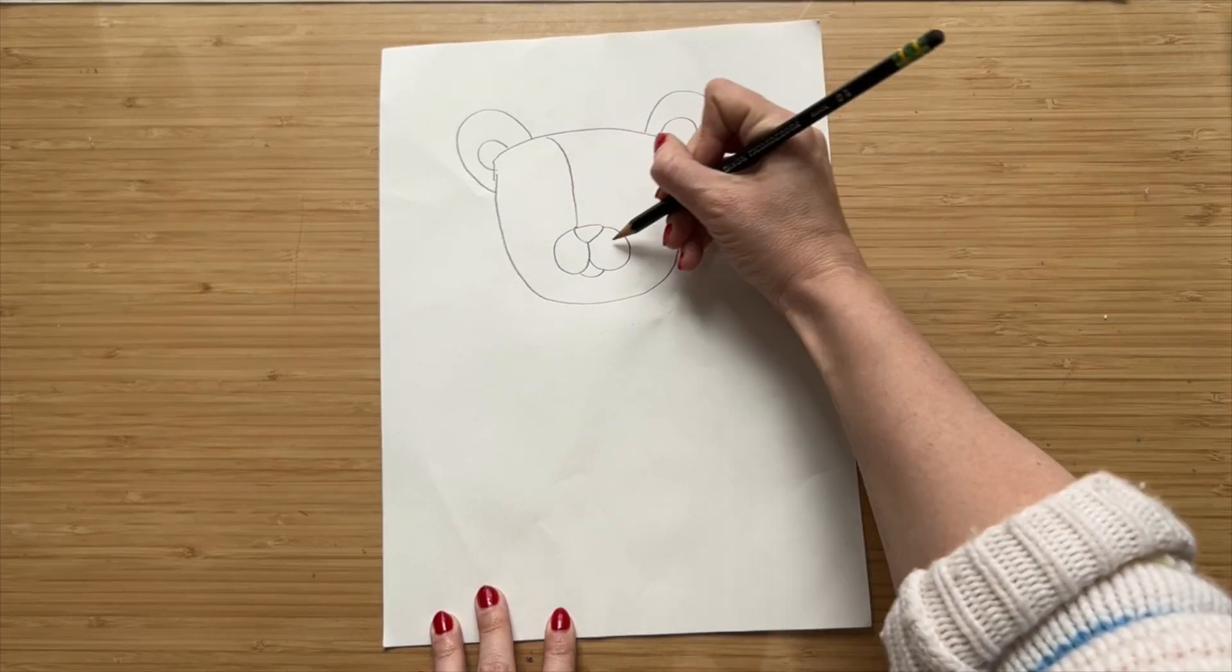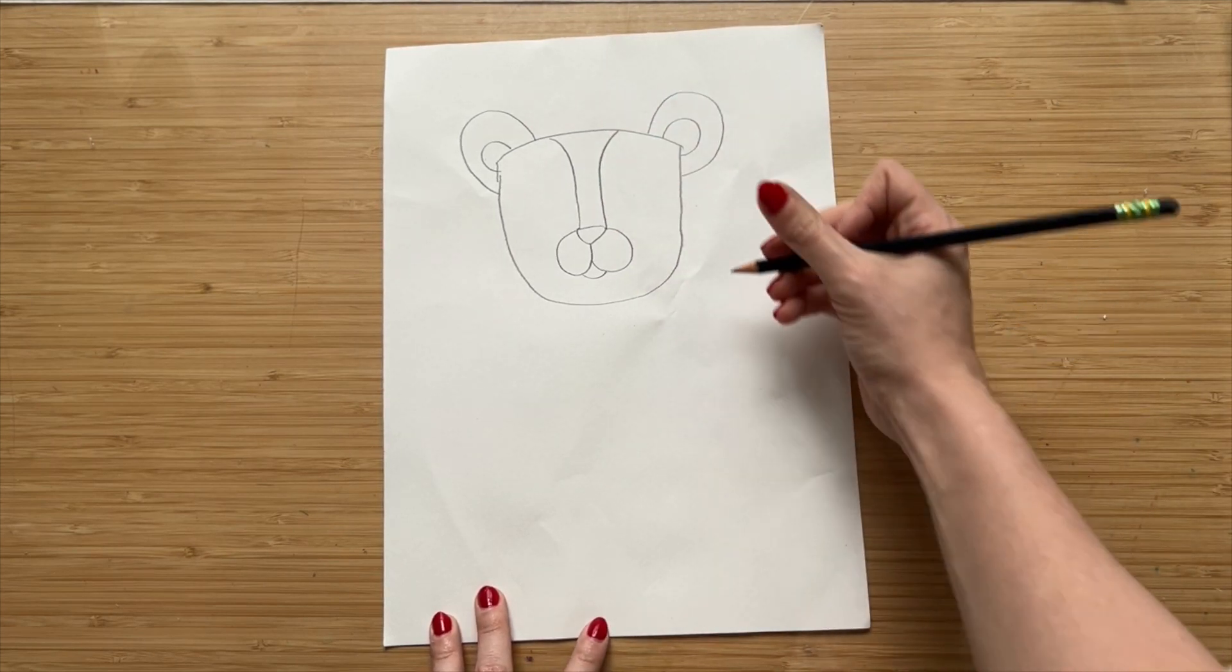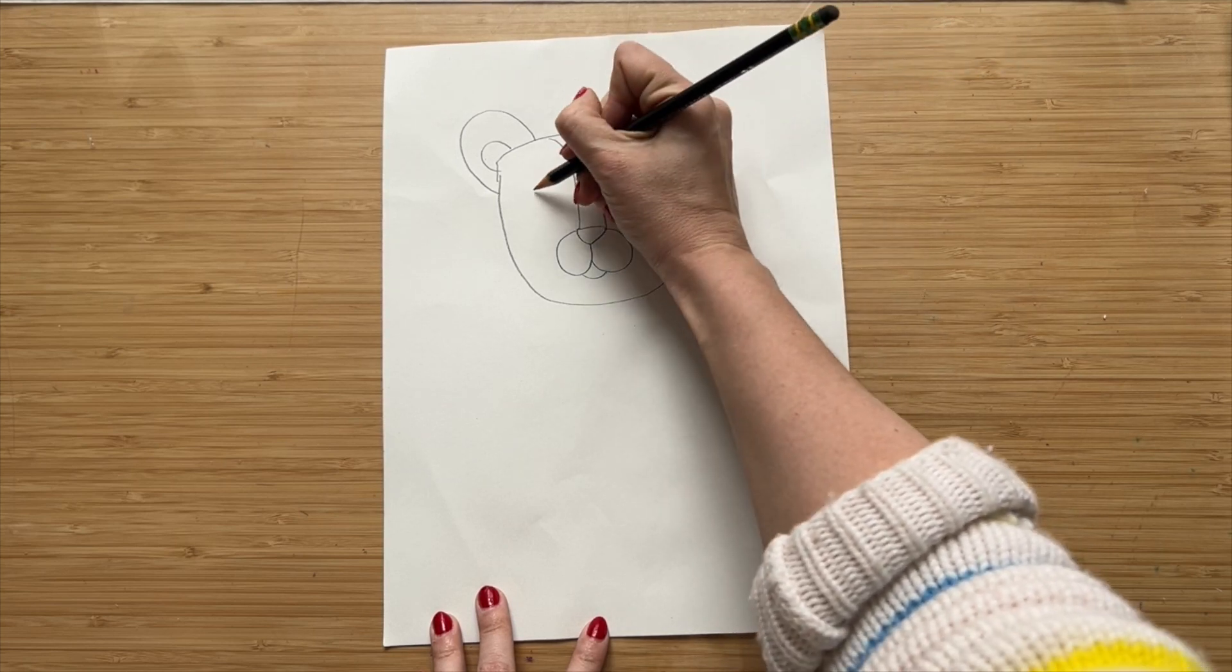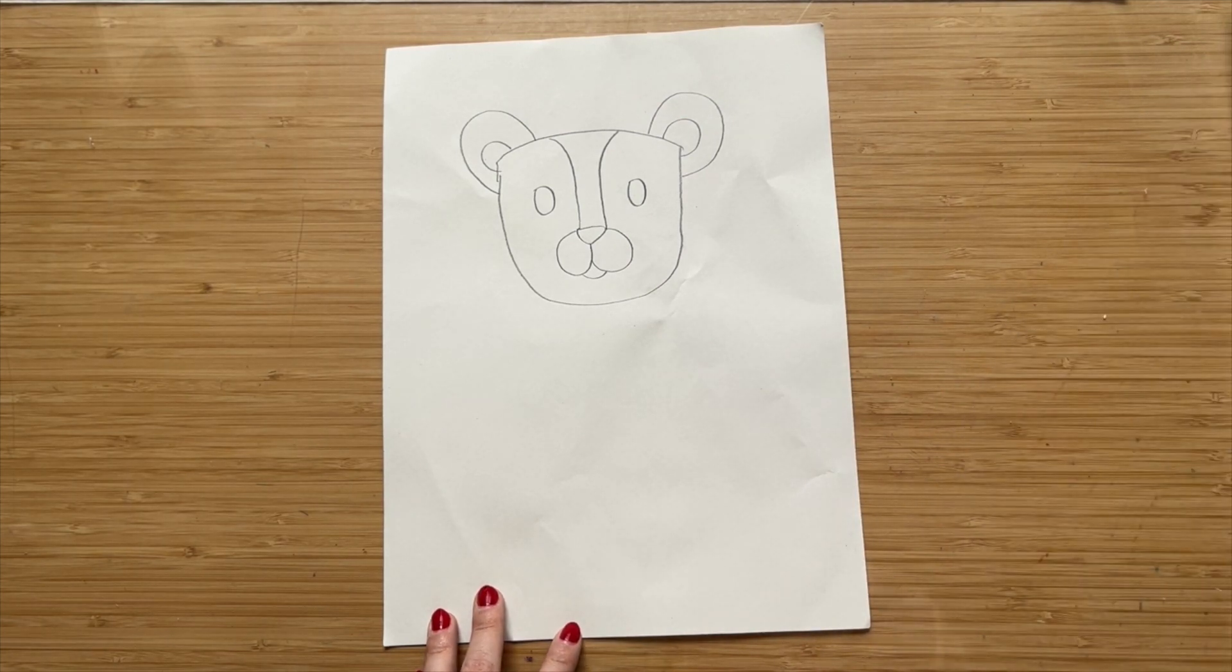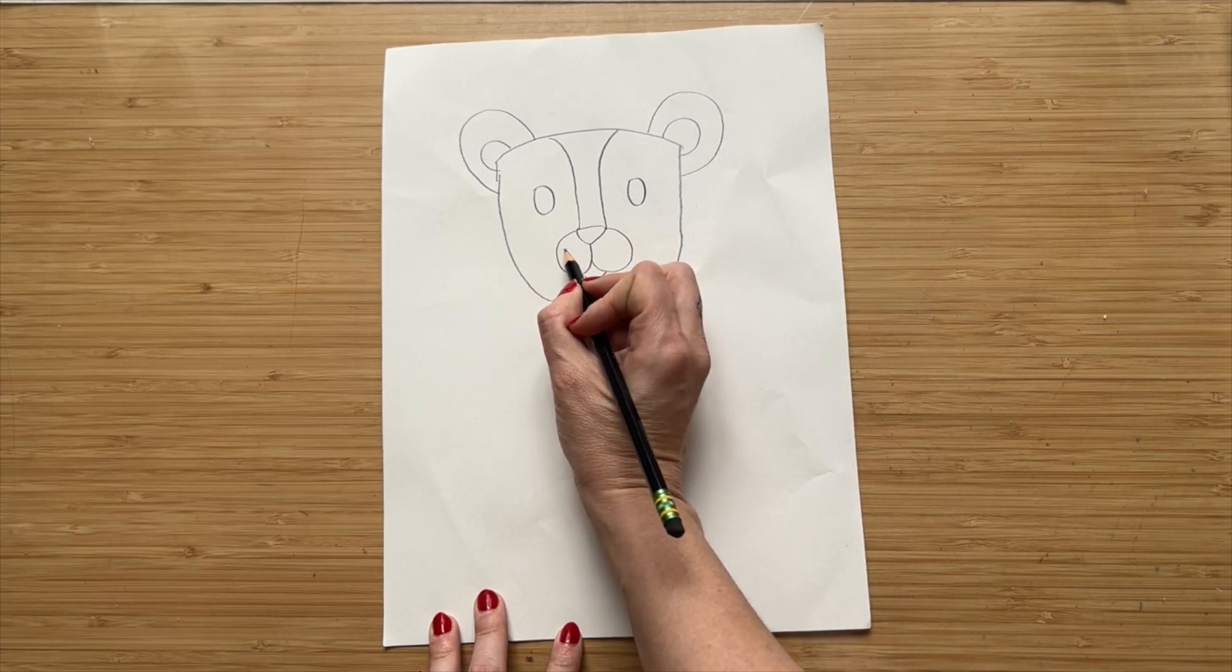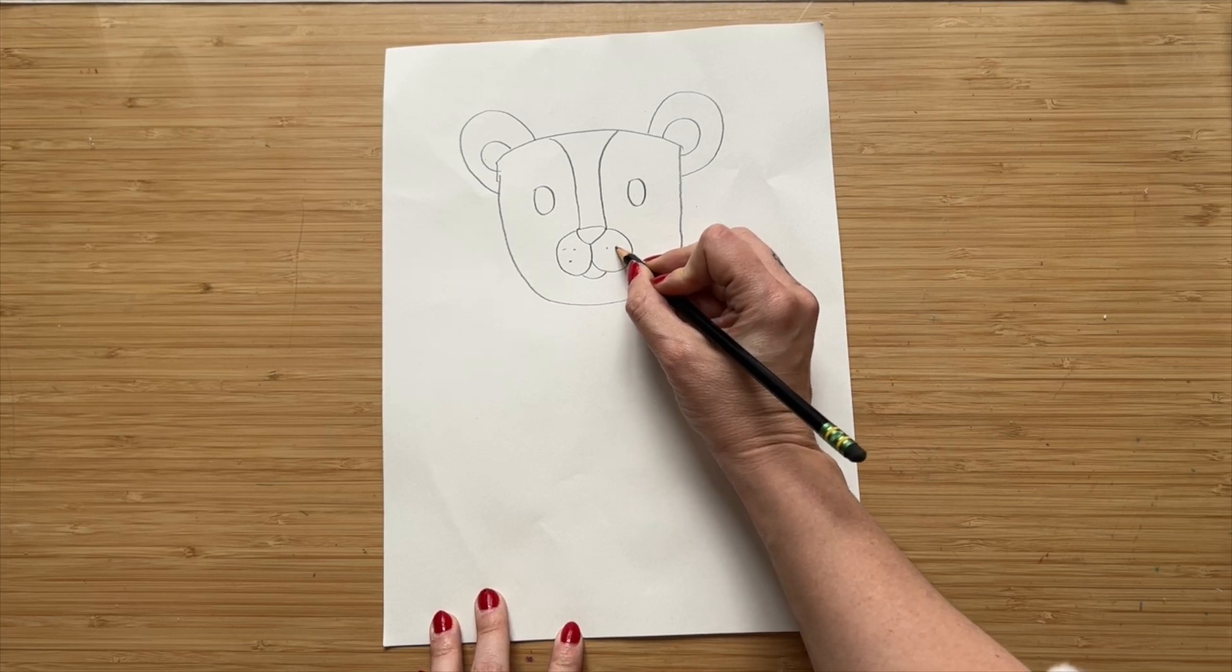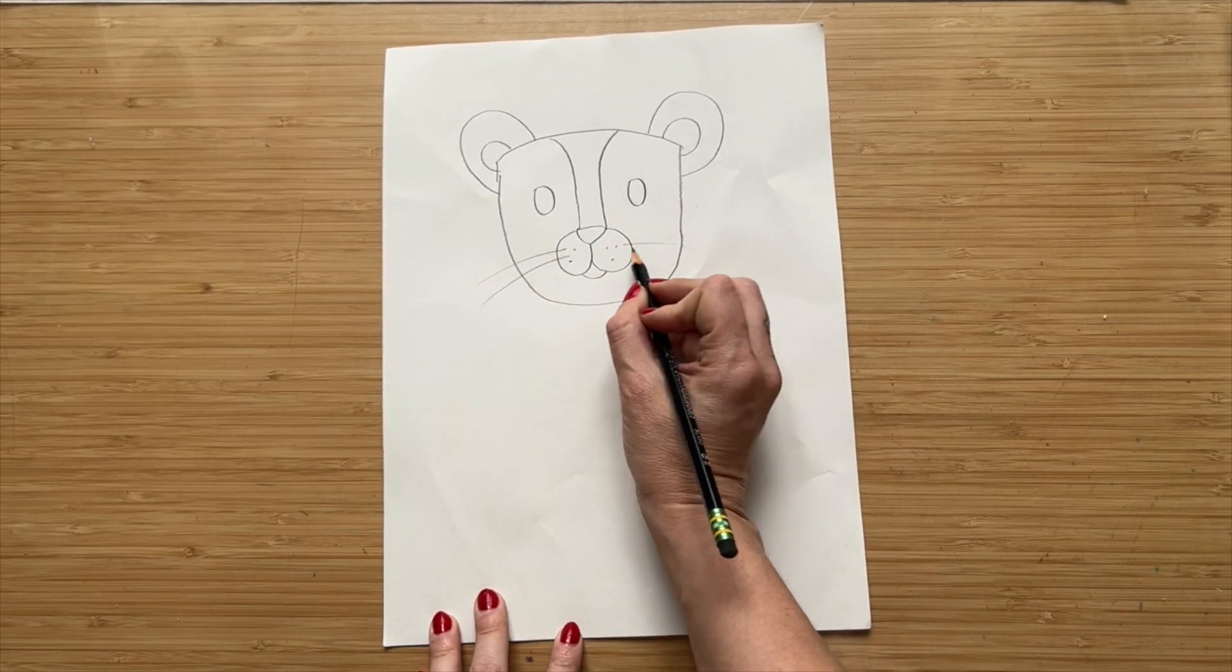Then we're going to add the snout or nose part here and then two eyes. You can draw the eyes however you like. You can also add some details of your choosing like some whiskers, some hairs, or even some teeth coming out of the lion.